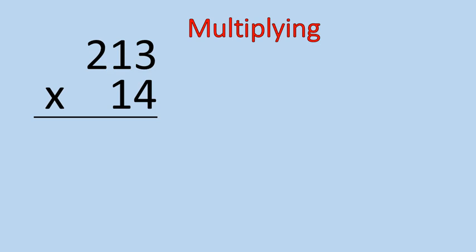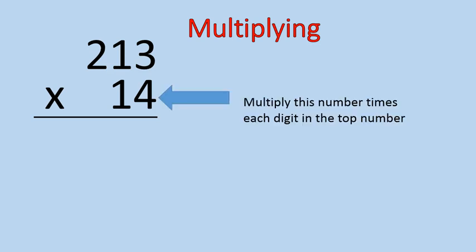If I have the number 213 times 14, what I'm going to do is I'm going to first take the number in the ones column, this 4 down here, and I'm going to multiply this number times every single number on the top. So, I'll start out with 4 times 3. 4 times 3 is 12.